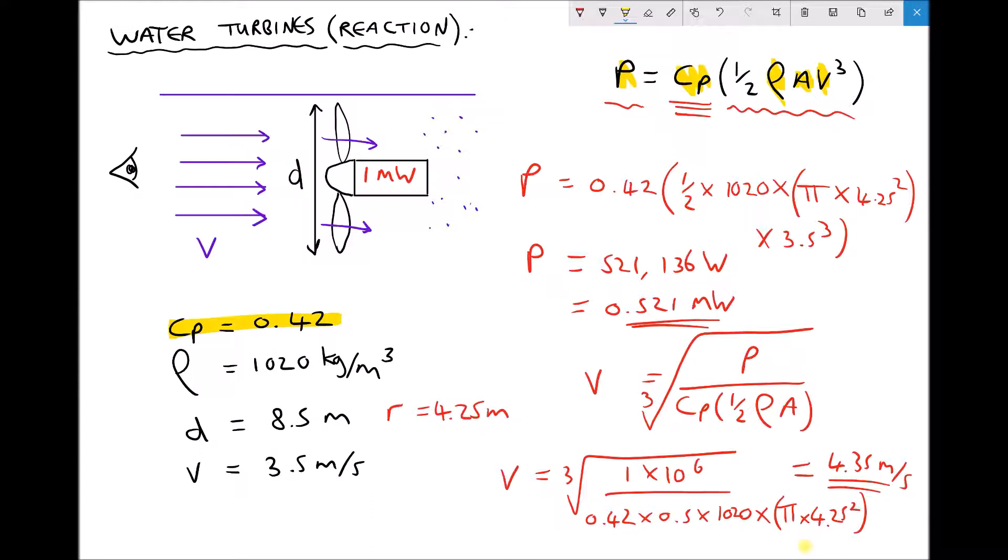Now this gives us an interesting point for comparison because we said when the fluid velocity was 3.5 meters per second we got a power output of half a megawatt roughly. But a relatively small increase in the fluid velocity up to 4.35 meters per second now gives us a power output of 1 megawatt or 1 times 10 to the 6 watts. What this demonstrates is that relatively small increases in velocity can lead to relatively high increases in power output and this is exactly the same thing that we see with wind turbines.